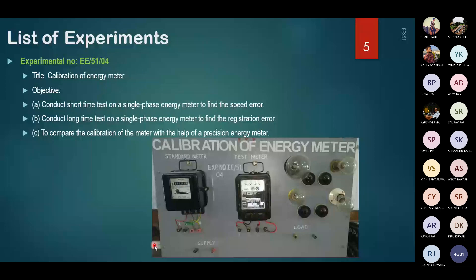So this is the energy meter laboratory setup. Here you can see standard meter and test meter, and it is the load connected over here. So we will measure the energy consumed by this load. The load here means lamps are connected, and we will also verify what is the reading in the standard meter. Comparing these two, we will find out the percentage error.